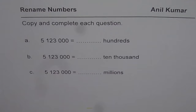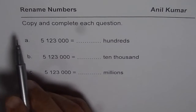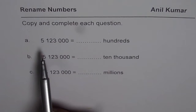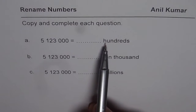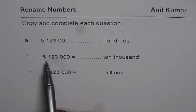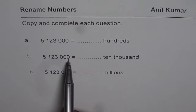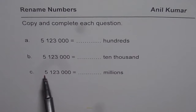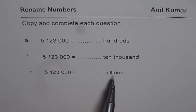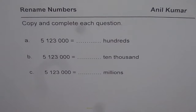That is the whole idea. You can copy and complete this table. We have a number here which is five million one hundred and twenty-three thousand. You have to write this number as hundreds, then as ten thousands, and then as millions. That is what you have to do.